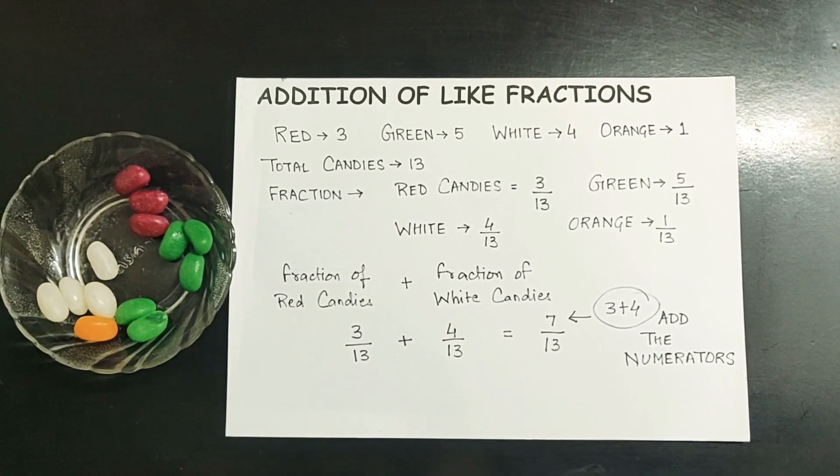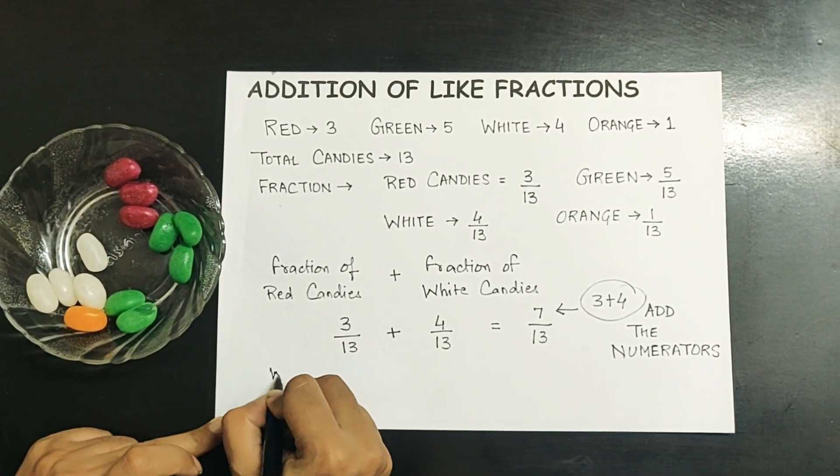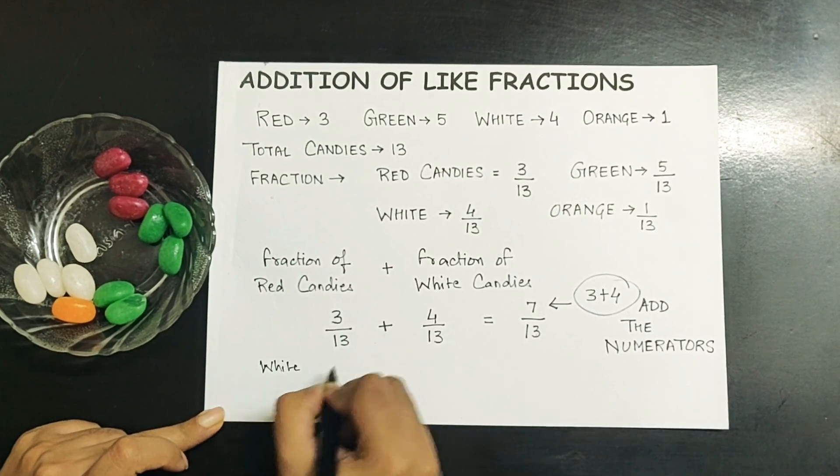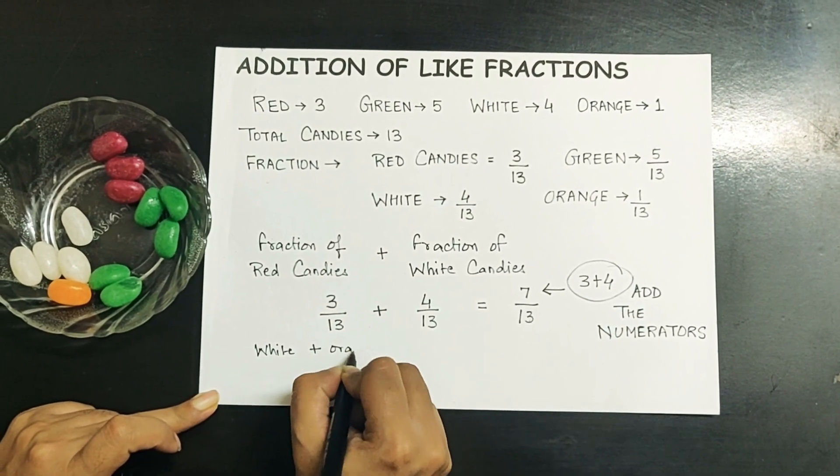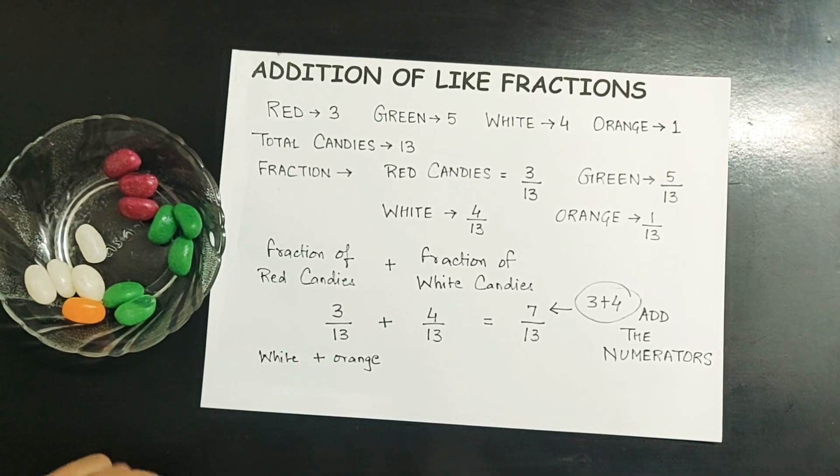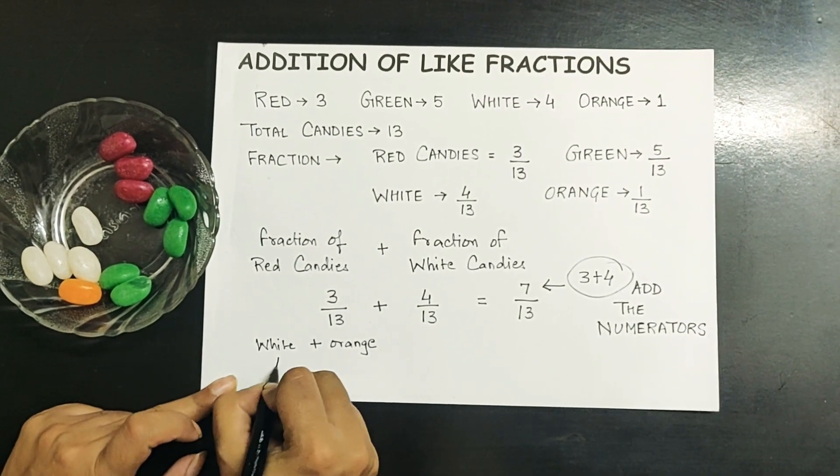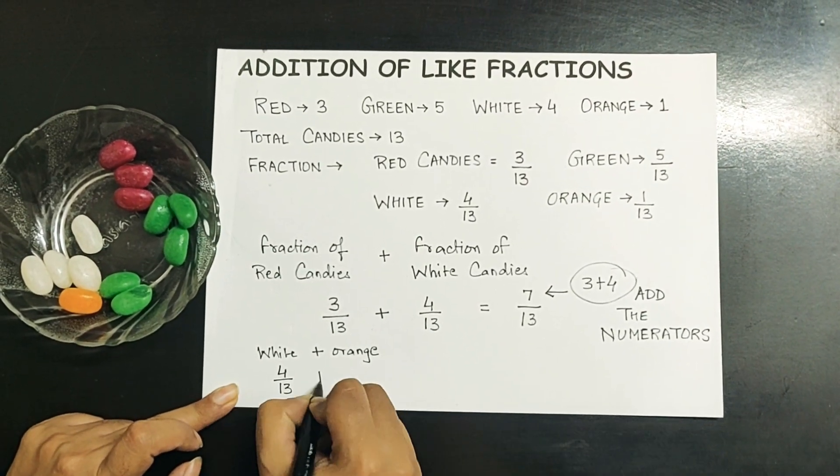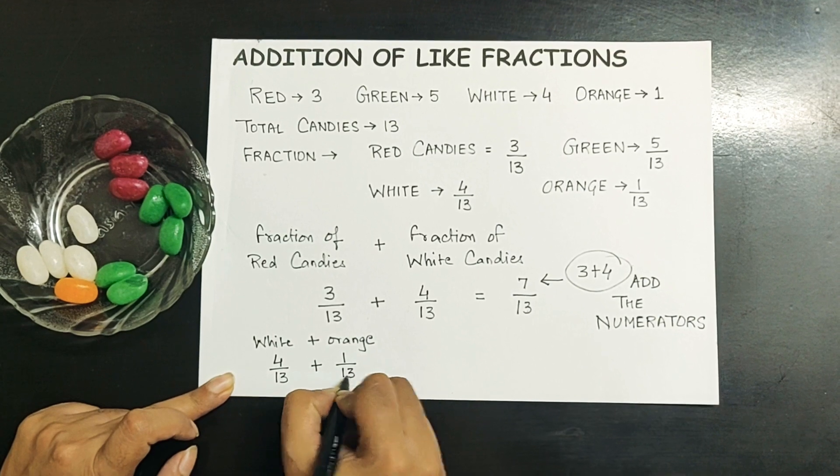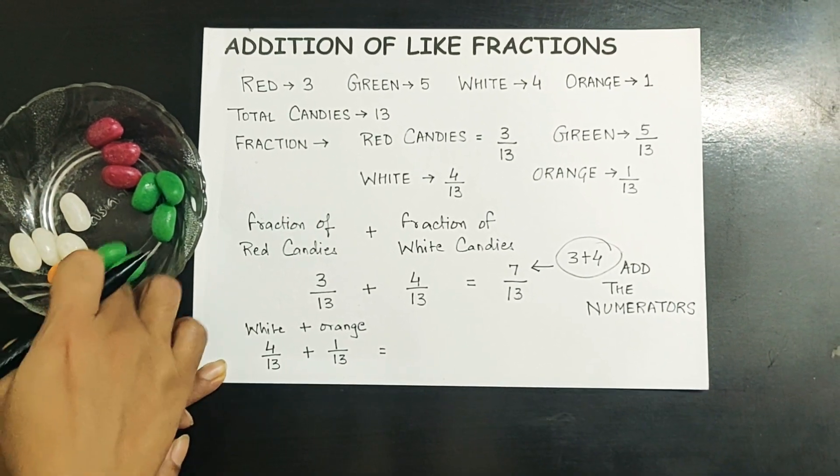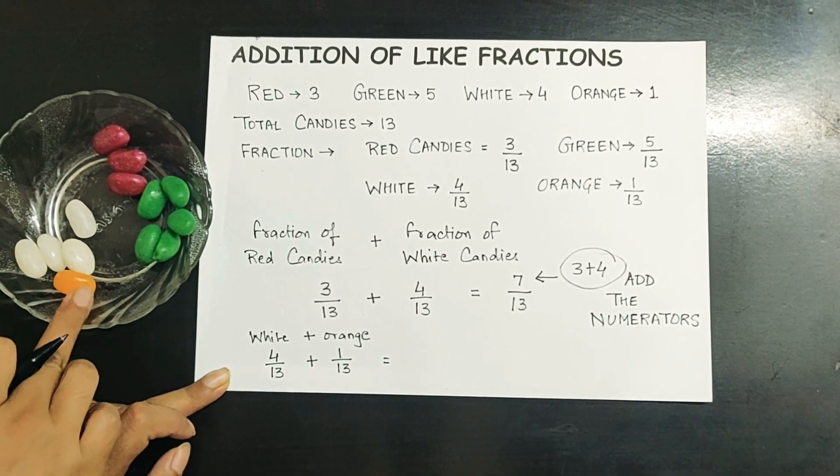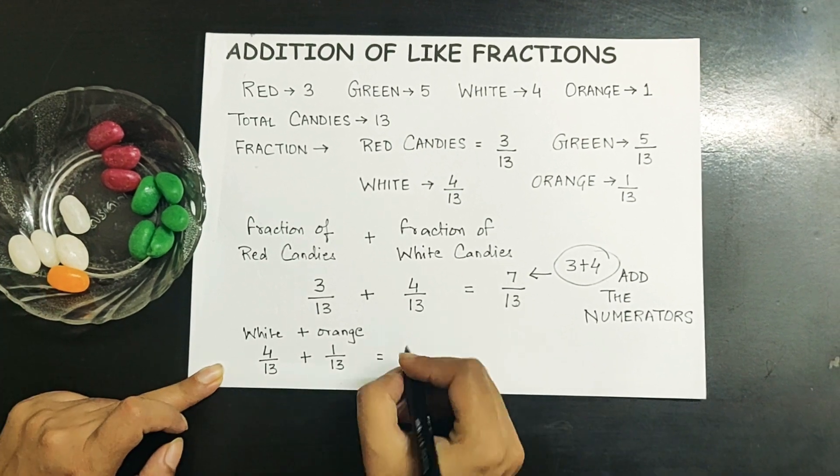If we say white plus orange, when we express it as a fraction it will be 4 upon 13 plus 1 upon 13. Now if you look at the total combination of white and orange candies, there are 5 candies, so it's 5 out of 13.